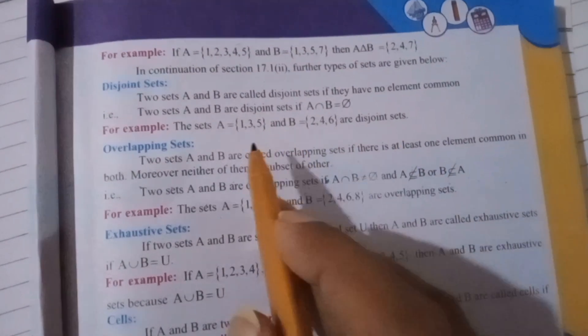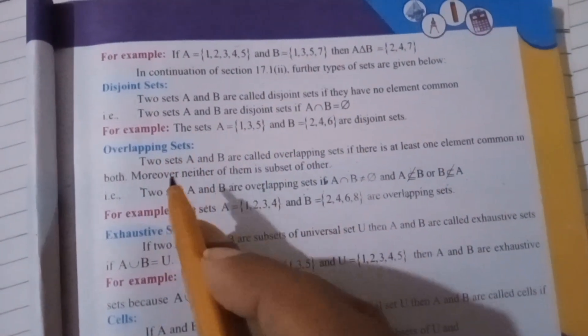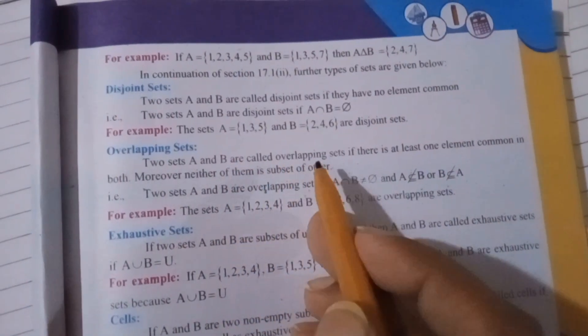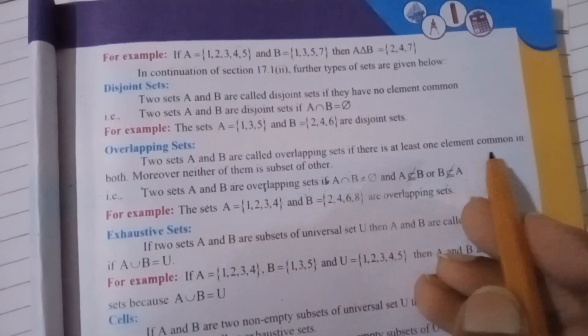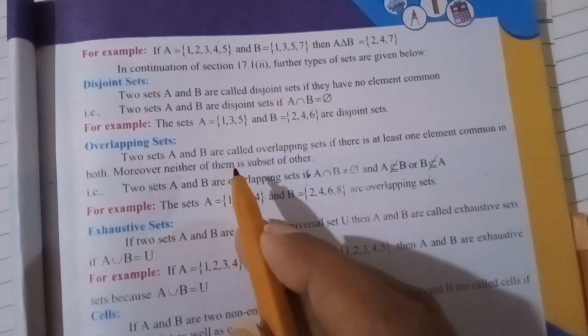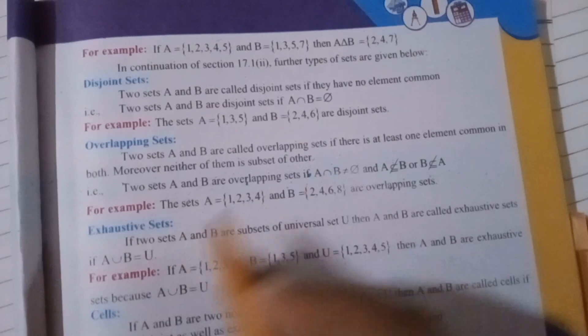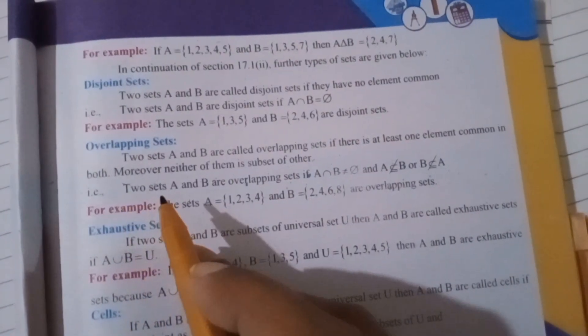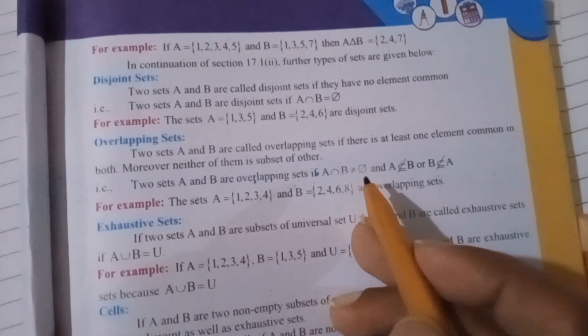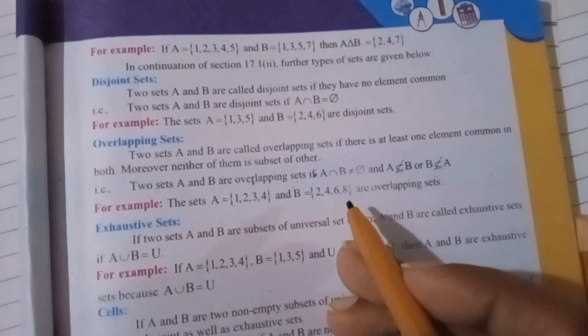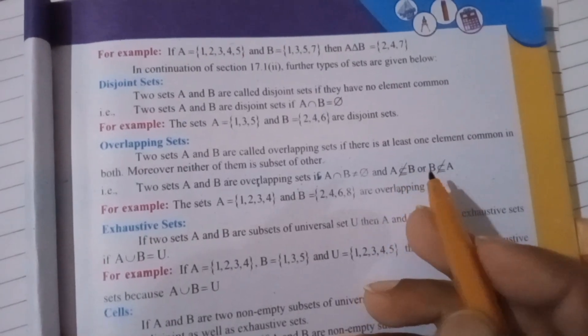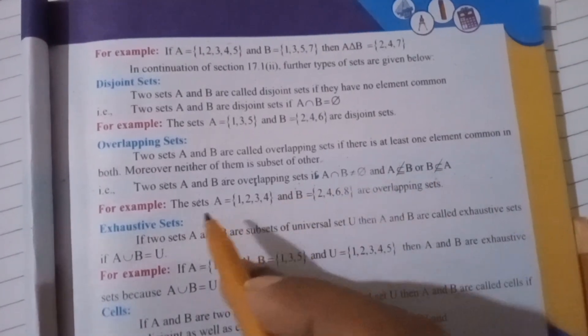Next is overlapping sets. Two sets A and B are called overlapping sets if there is at least one element common in both. Moreover, neither of them is subset of other. Two sets A and B are overlapping sets if A intersection B is not null set and A is not the subset of B or B is not the subset of A.